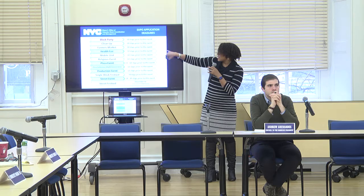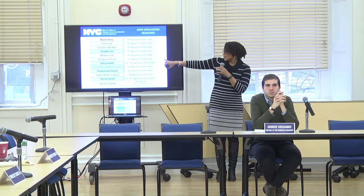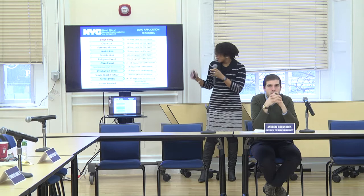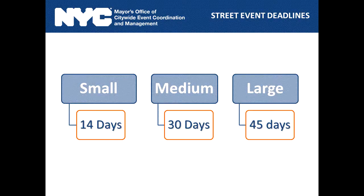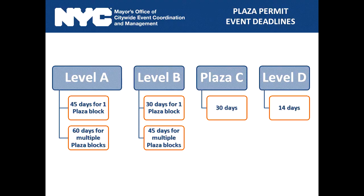Permit deadlines: block parties are now 60 days — no longer 90 days. Cleanups, farmers markets, mobile units, and religious events are all 60 days. Health fairs are 30 days. Press conferences, rallies, and demonstrations are 10 days. Production events are 10 days. Single block festivals are 90 days. Street festivals are still December 31st of the preceding year. Street events vary by size: small is 14 days, medium is 30 days, large is 45 days. Plaza event deadlines depend on the level and size of the plaza.